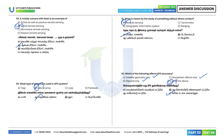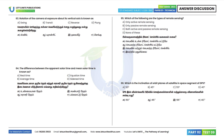Question 63: Rotation of the camera at exposure about its vertical axis is known as swing. Option A is the correct answer. Question 64: The difference between apparent solar time and mean solar time is known as the equation of time. Option C is the correct answer.